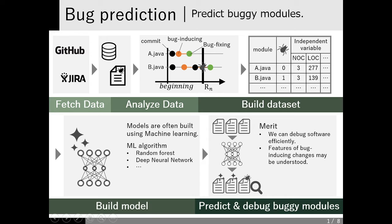After analyzing development history, a dataset like this table is constructed. From the constructed dataset, we can build a bug prediction model using machine learning, and with the model we can predict buggy modules in the target project. We can then conduct testing or review on them. Like this, bug prediction enables us to debug software efficiently.